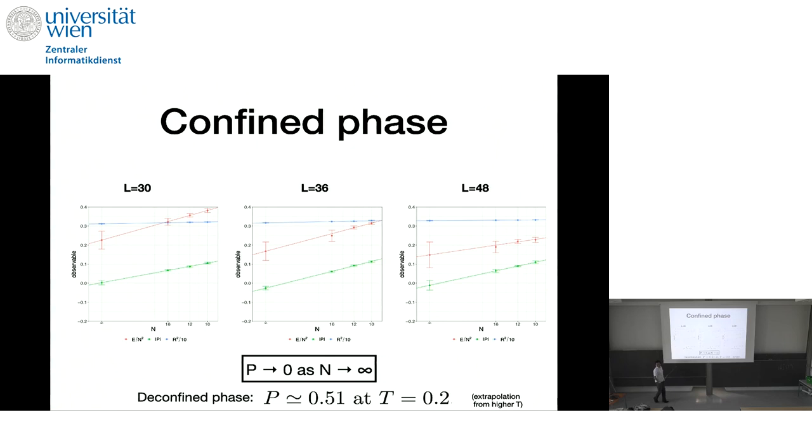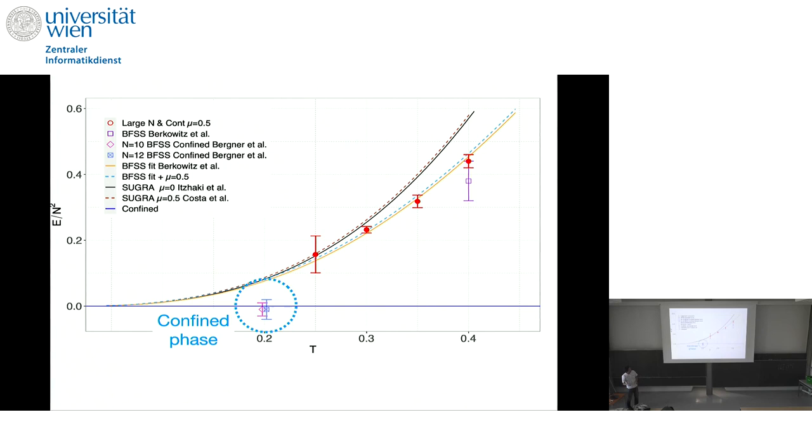And if we extrapolate the value of Polyakov loop, but it's clearly zero, 0.5 is high. This is clearly confined phase, clearly different from the deconfined phase. And actually, you may wonder why here, suddenly we have a much bigger error compared to a bit higher temperature.